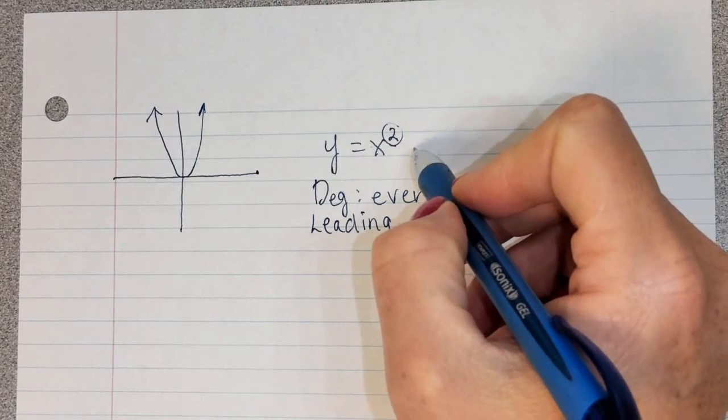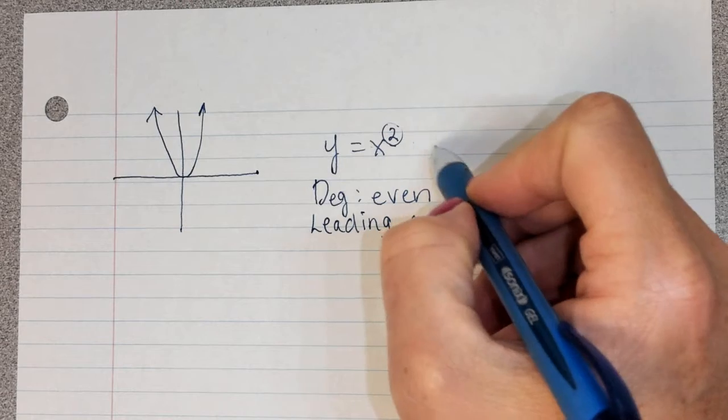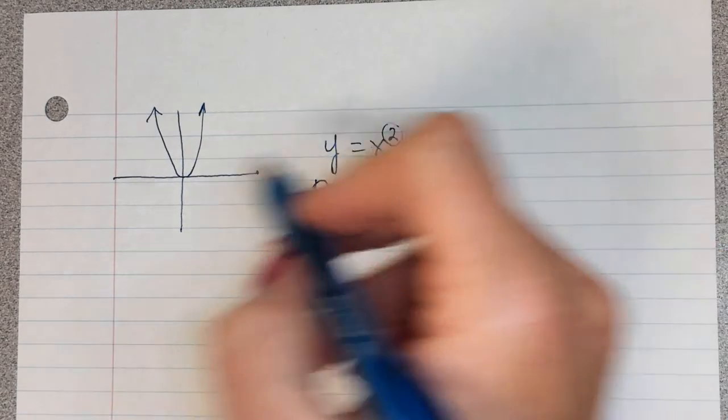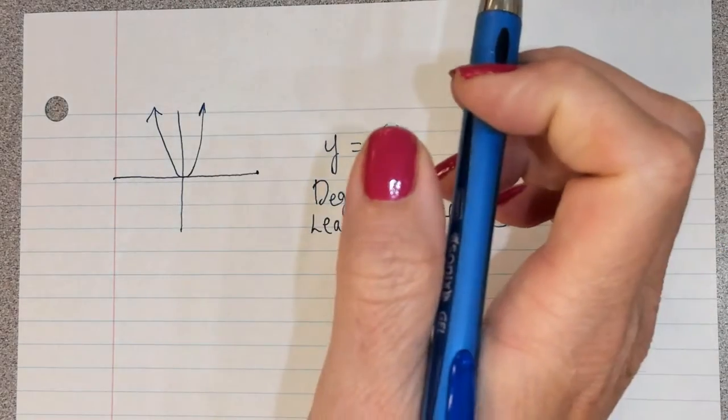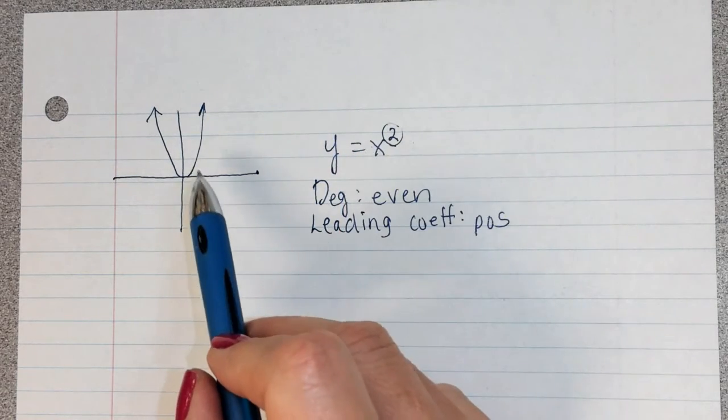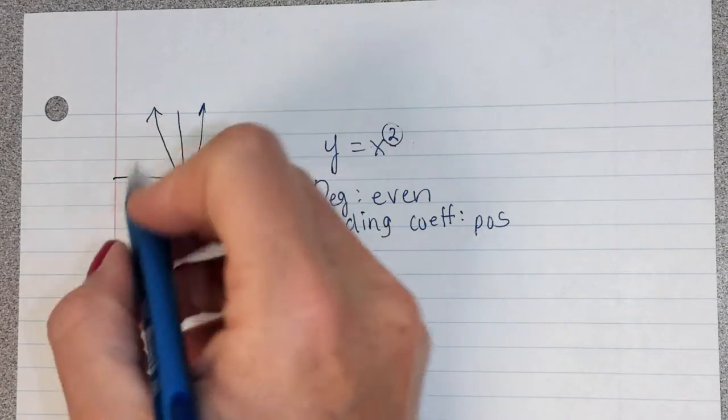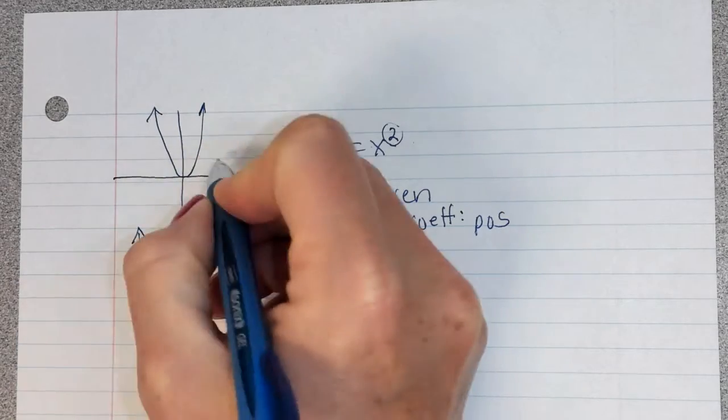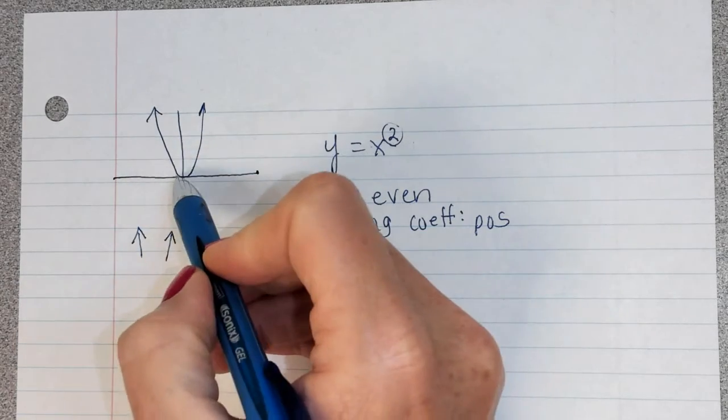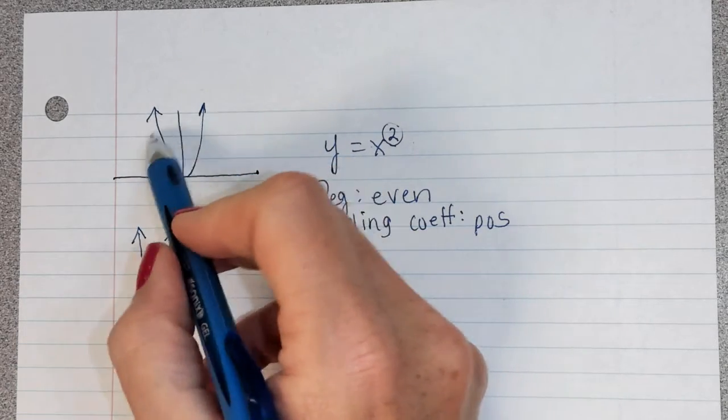Even if we do other things to this, like if we have a plus x or a plus 3, all that does is shift it up and down and does things like that. It doesn't change the basic fact that at the end of this function, it's going up here and it's going up here. See how that's the direction the arrows are pointing at the end?